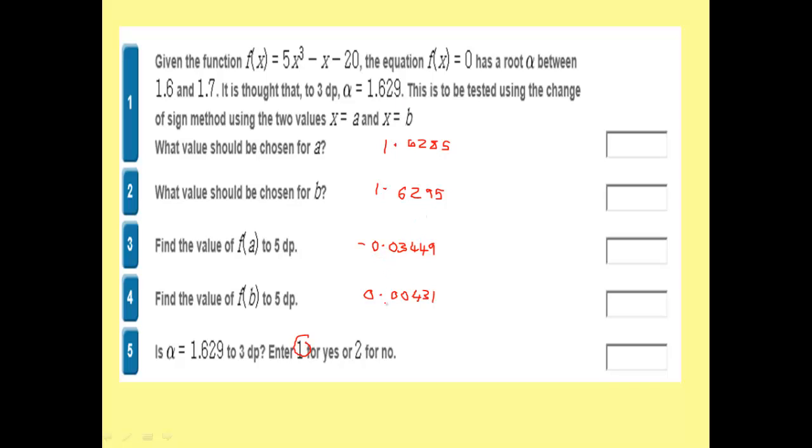Anything slightly smaller than this would round down to 1.629. And then you've got a change of sign, so we can say that alpha lies between these two points.